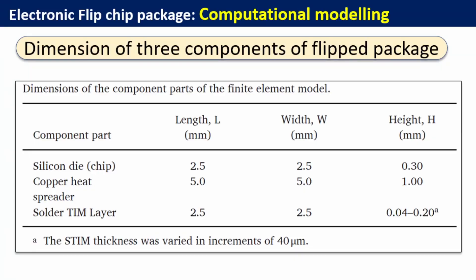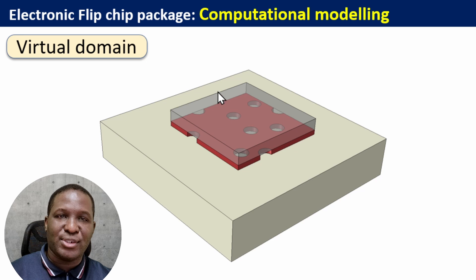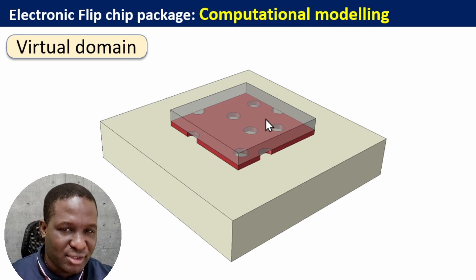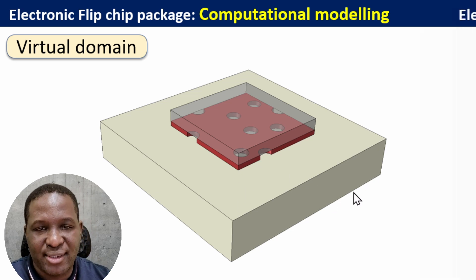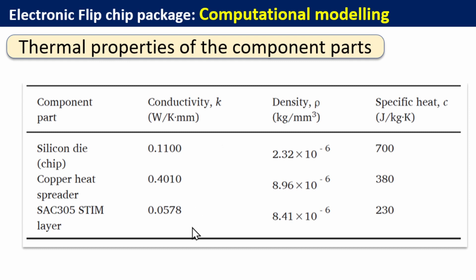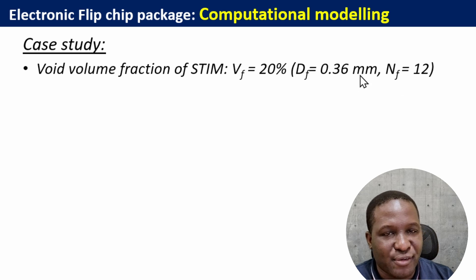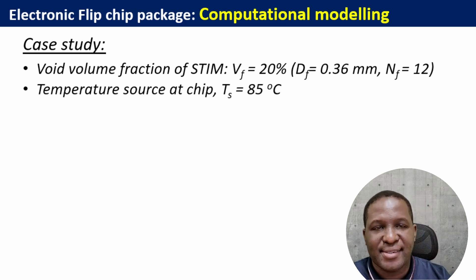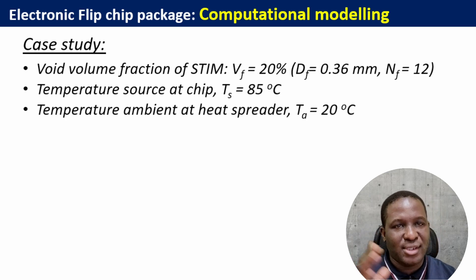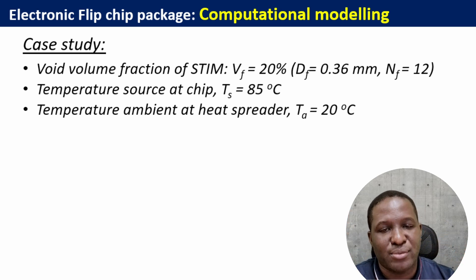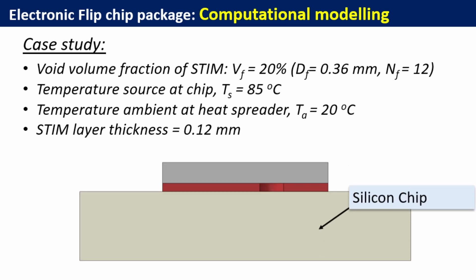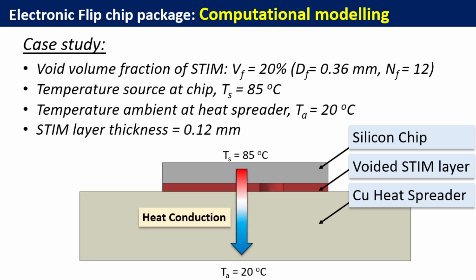In modeling the system, the dimensions we're going to be using will be for a three-component system of a flip chip package. I've taken these dimensions from the paper referenced earlier. We have a domain with the silicon chip at the top, the solder thermal interface material layer that is voided — you can see the voids in the solder layer in the middle — and at the base, the copper heat spreader. The materials and their conductivities, densities, and specific heat values are given. The case study uses a void volume fraction of 20%, with the diameter of the void specified and a total number of 12 voids. The temperature at the silicon chip is 85 degrees, the environmental temperature is 20 degrees — typical room temperature — and the solder layer thickness is 0.12 millimeters. The conduction heat path will be from the very hot silicon chip onto the environment where the heat spreader is located.